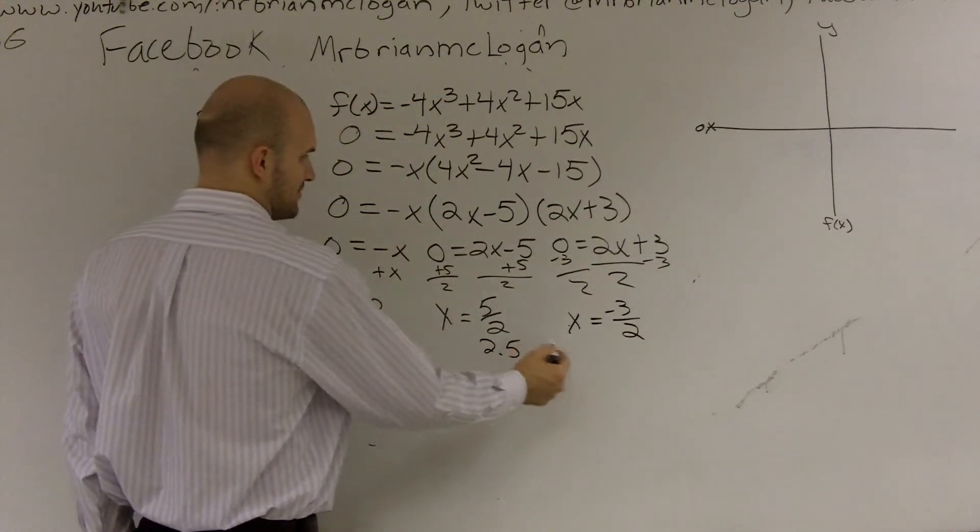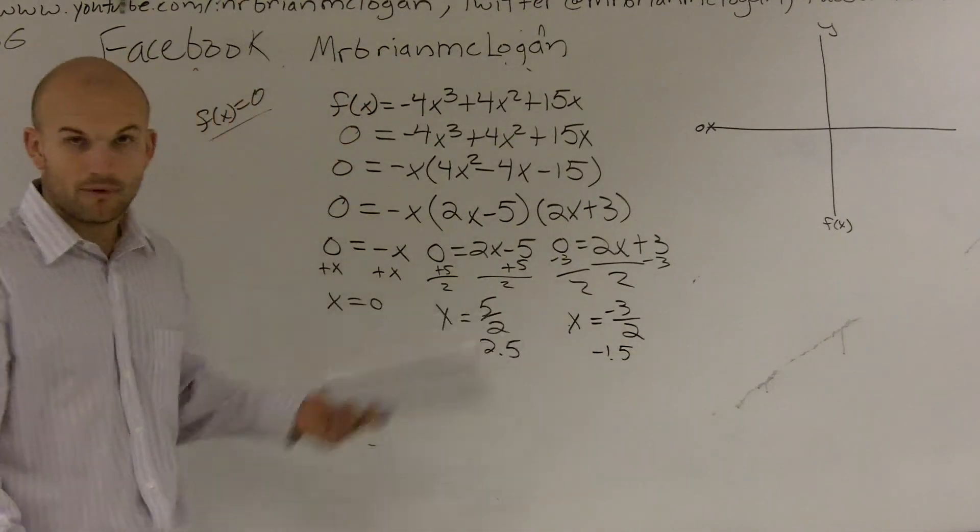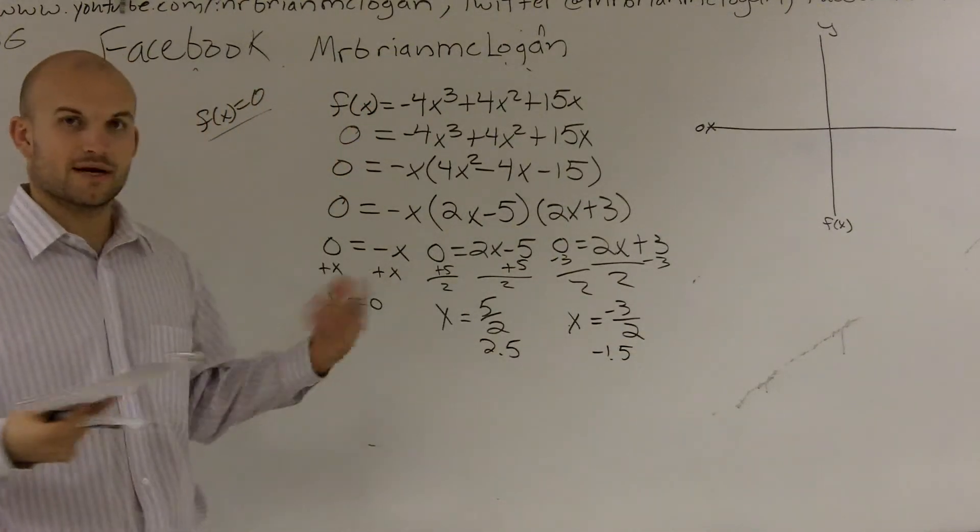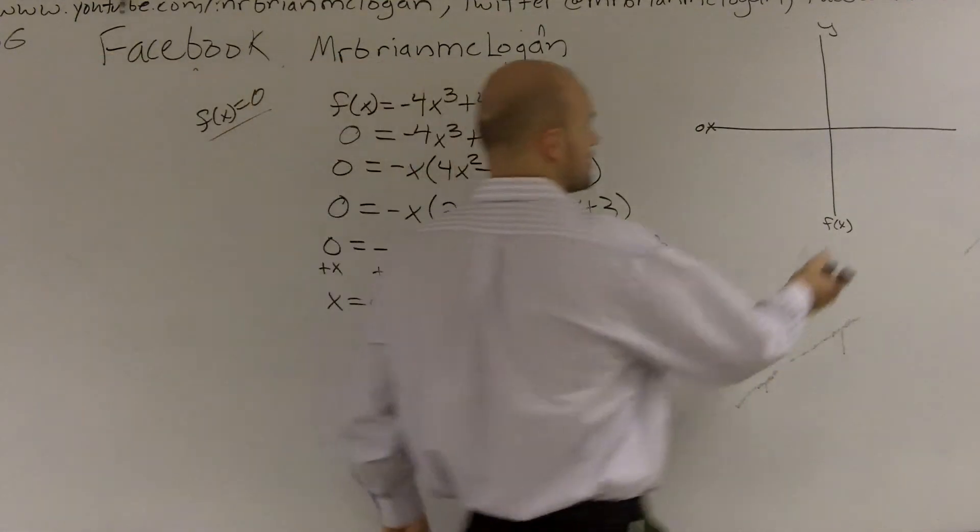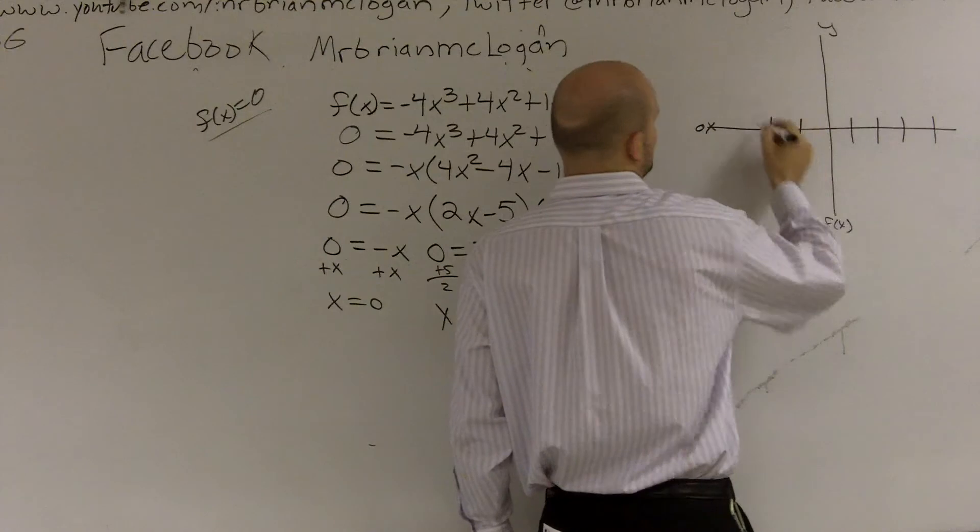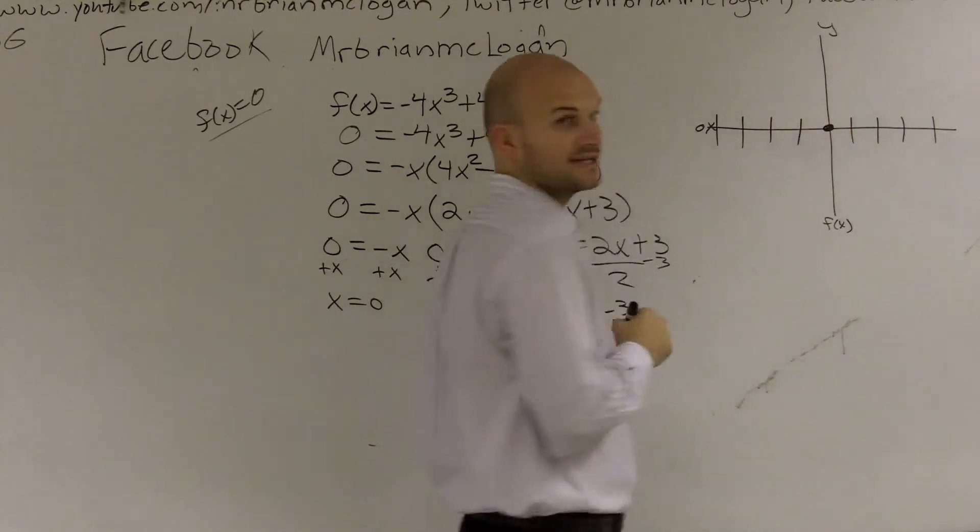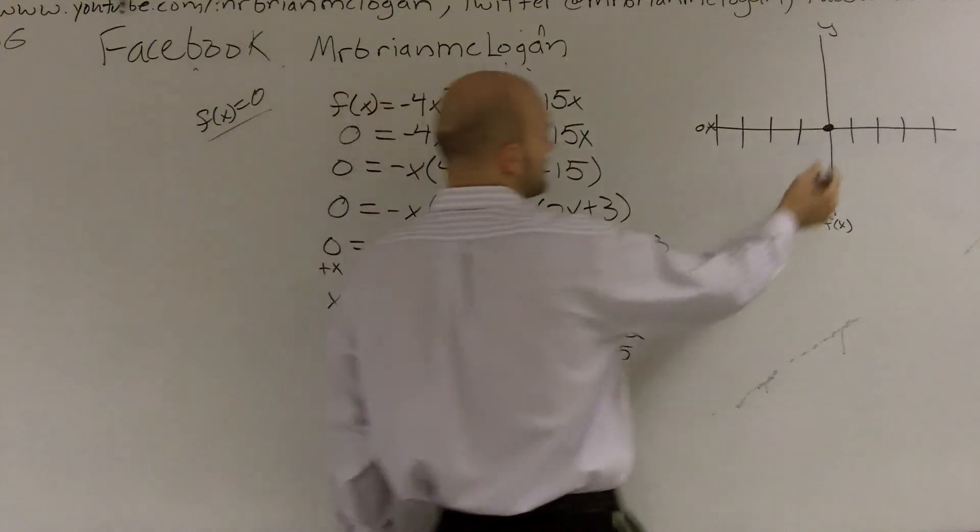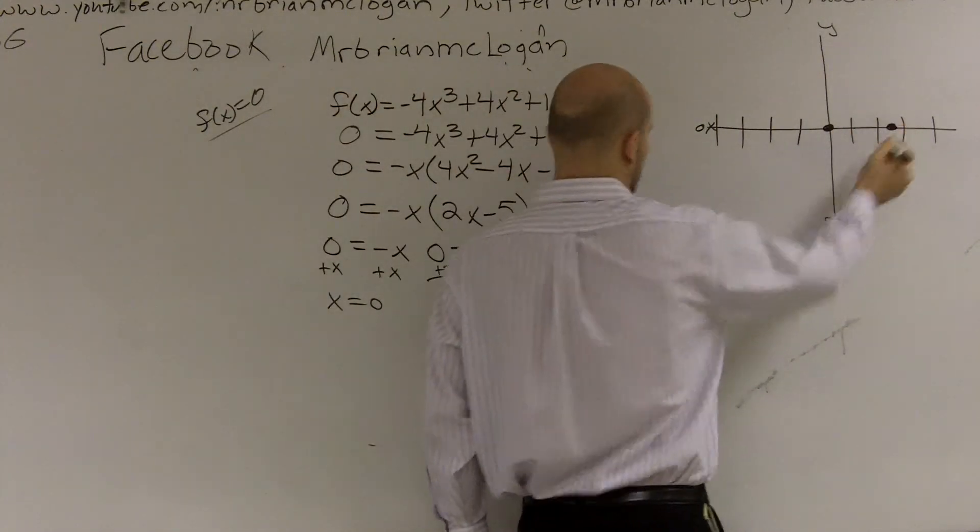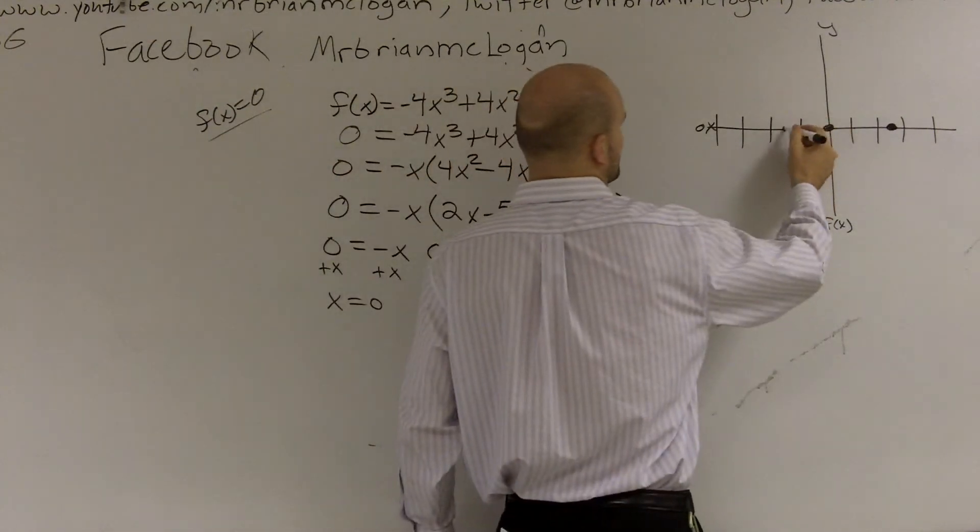So for those of you decimal people, what I'm going to have is now I have these three points. So what I'm going to do is I want to graph these three points. So I go back over my table and I just do 1, 2, 3, 4, 1, 2, 3, 4. So I go zero, that's one x-intercept. The next one was 2.5, right here. And the third one was a negative 1.5, right there.